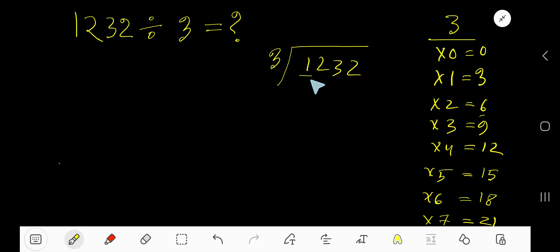3 goes into 1 how many times? 0 times. 0 times 3 is 0. Subtract 1, bring down these 2. 3 goes into 12 how many times? 4 times. 4 times 3 is 12. Subtract 0. Bring down this digit, 3.